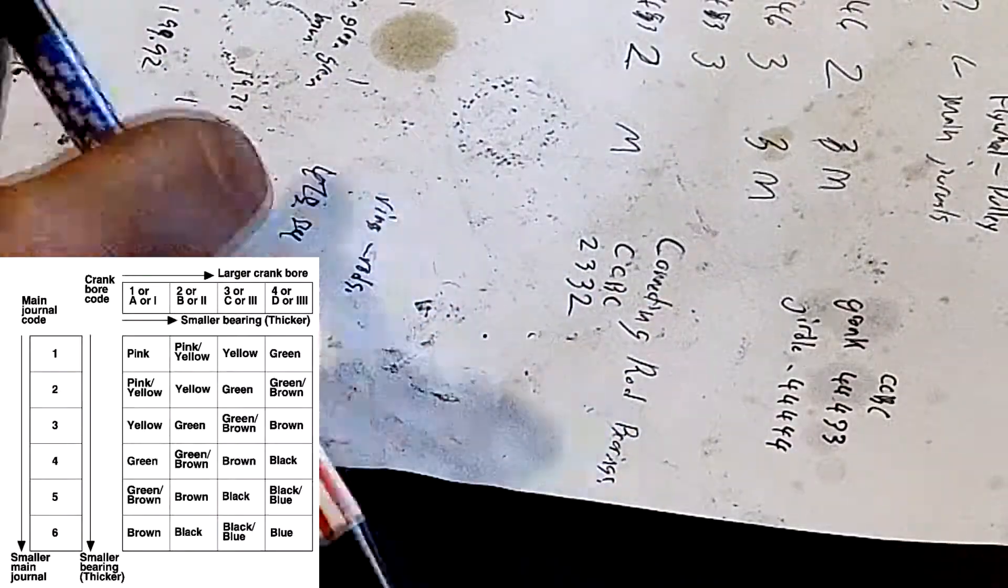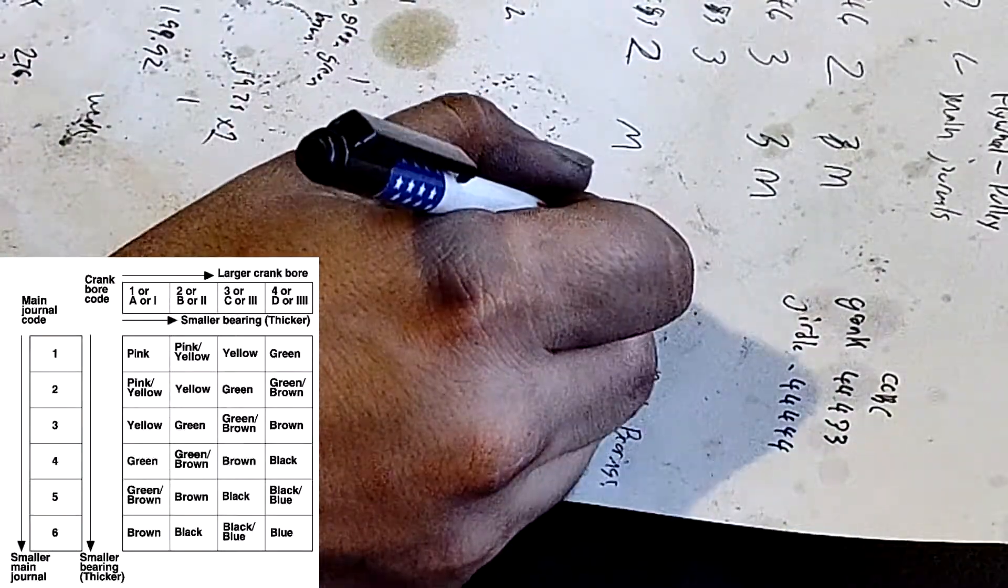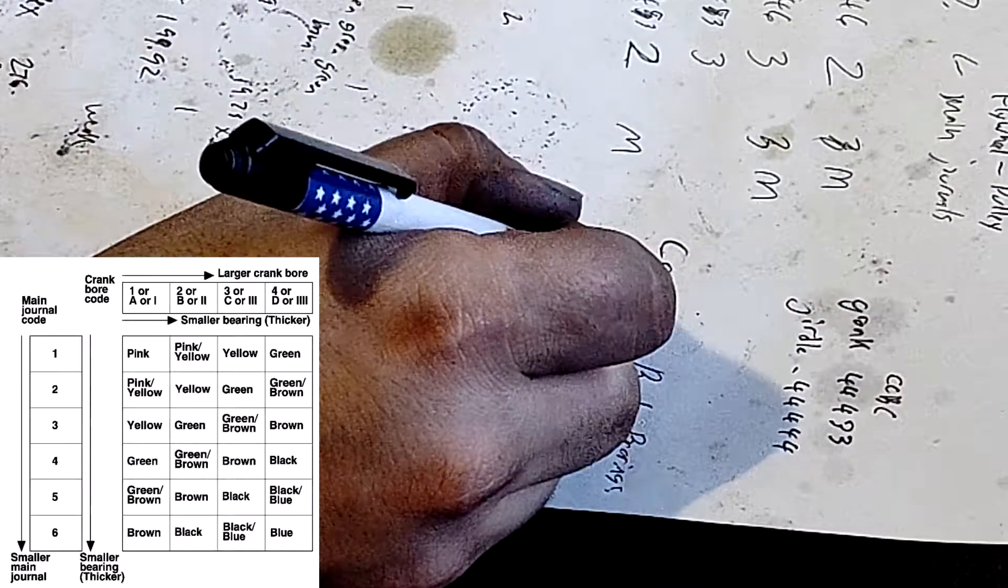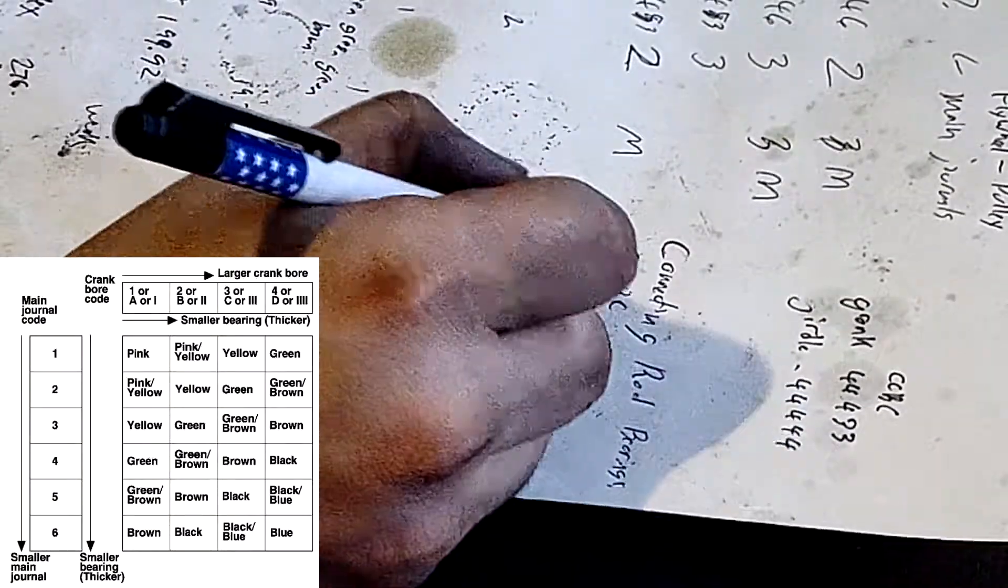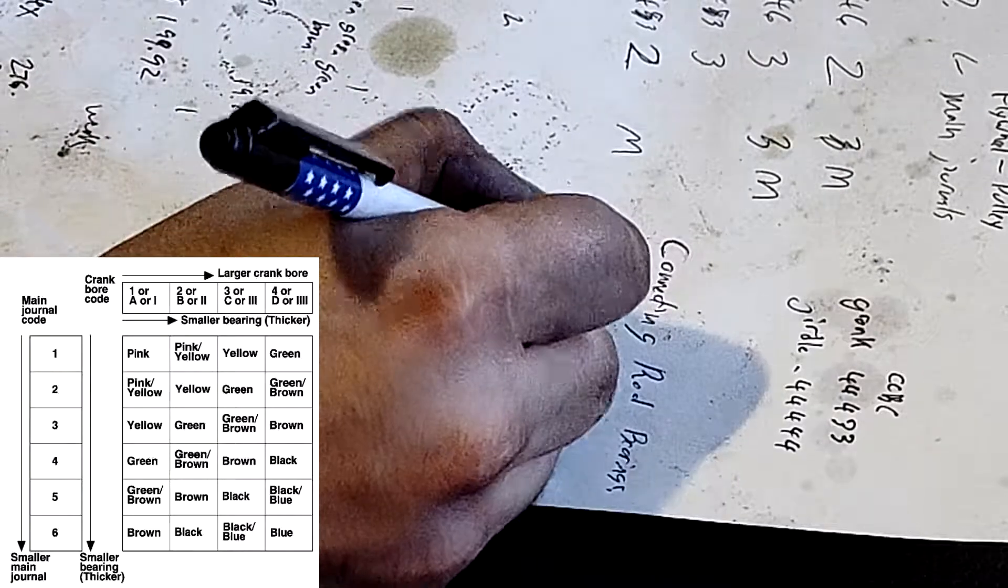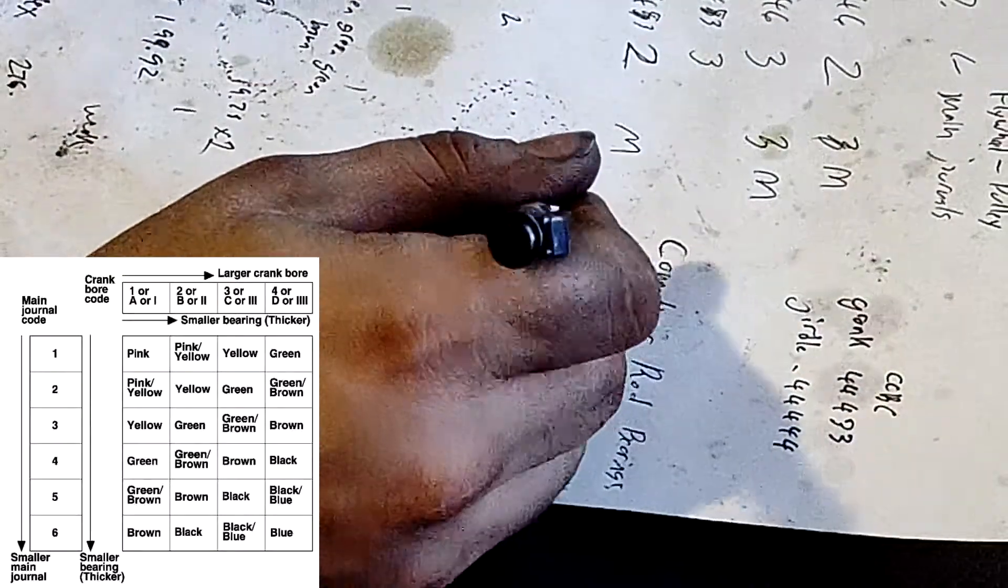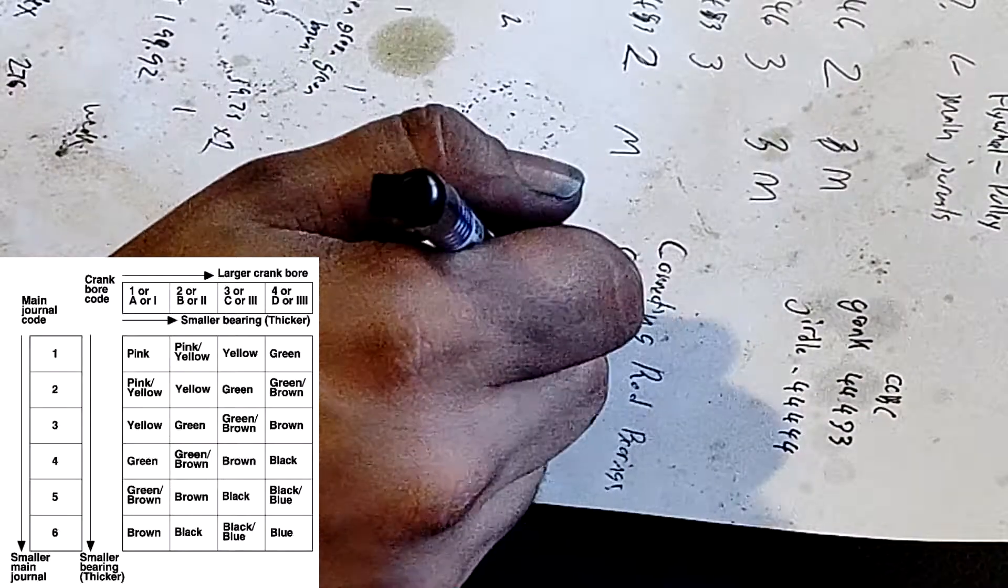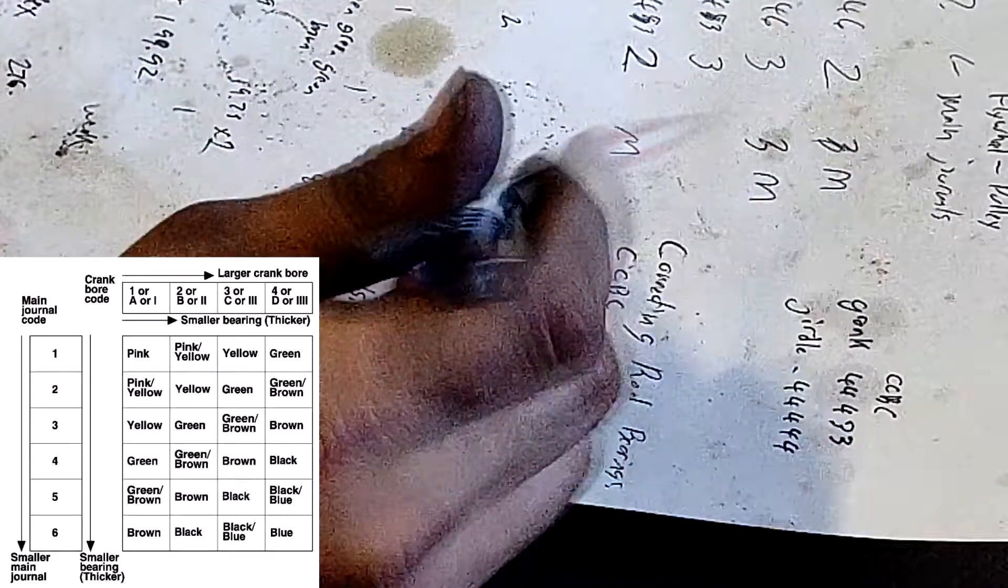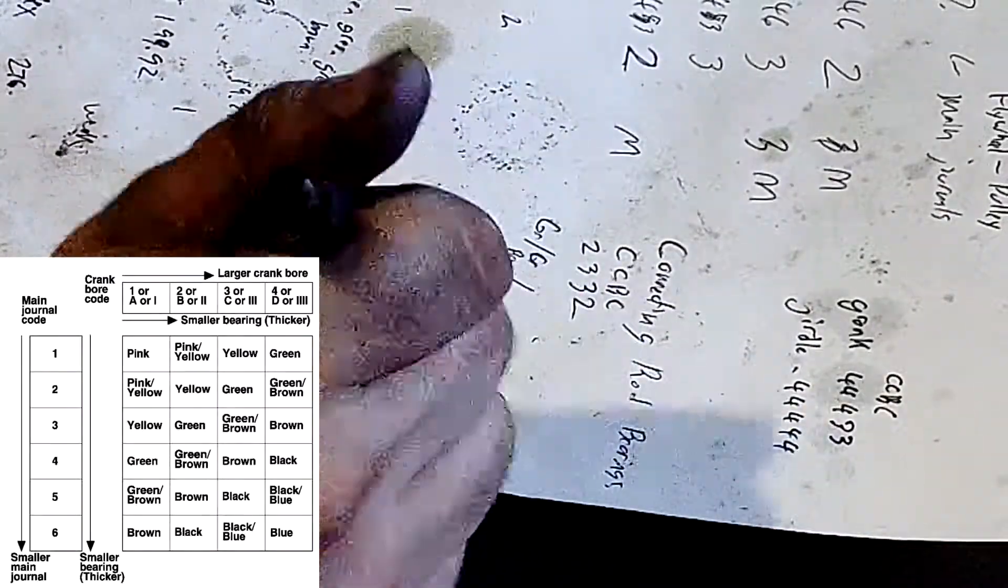And then we go down to 2 which says C2 is green. C3 is green brown. What that means is green is the green bearing. When it says green slash brown or pink slash yellow black slash blue, when it has a slash you could use either or. When it just says green use the green one.